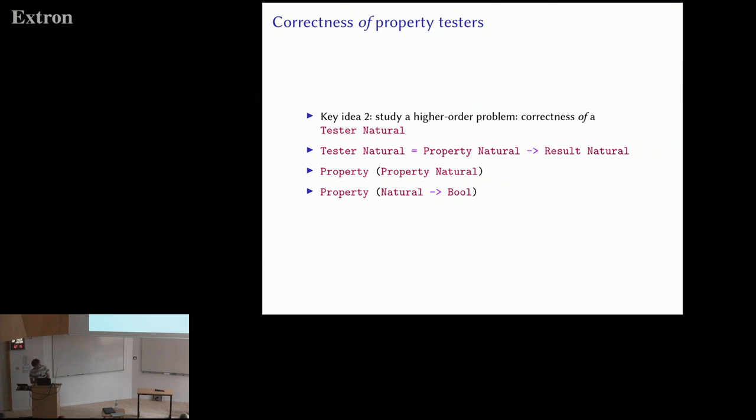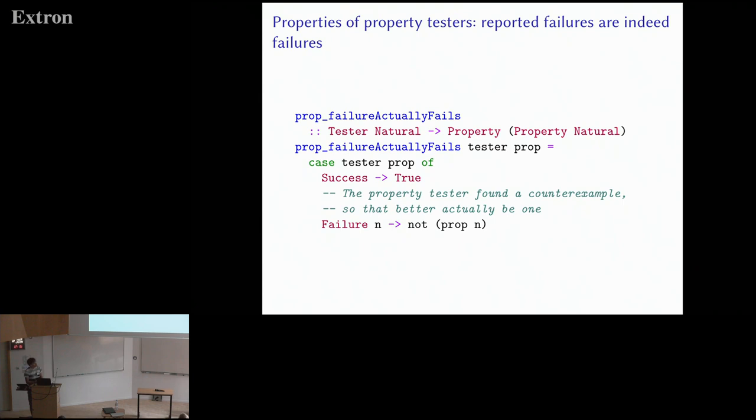Here's one example of a property you might want to have for a given property tester. One thing we should certainly have is that if it did find a failure, if it did find a counterexample, then that thing that it claimed it found better actually be a counterexample. It better actually be a point where the property doesn't hold.